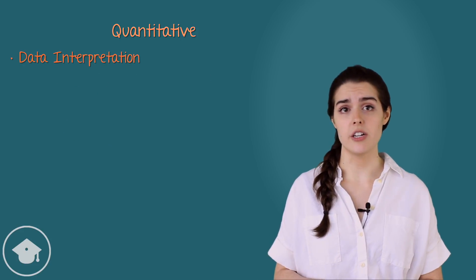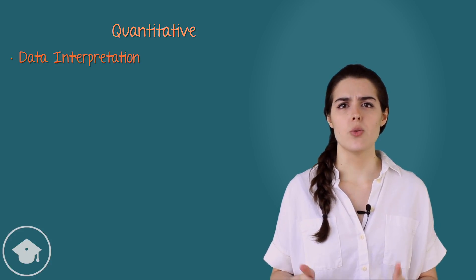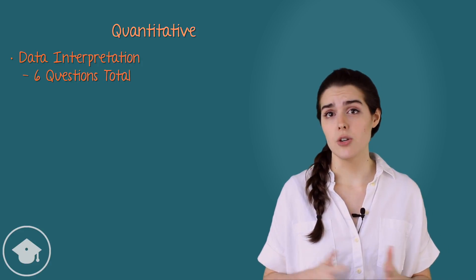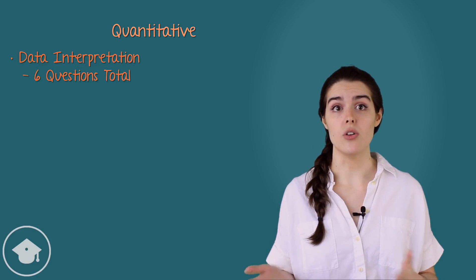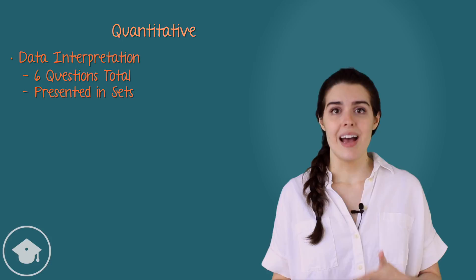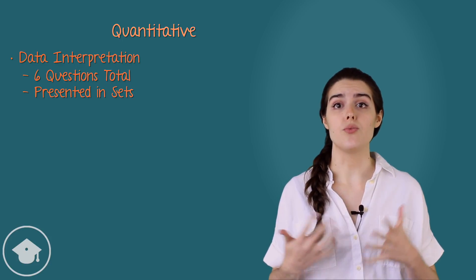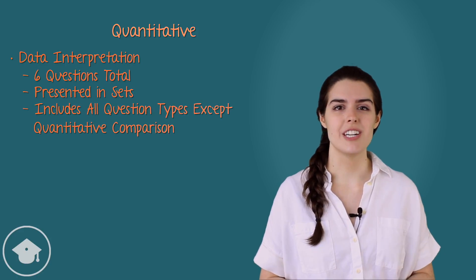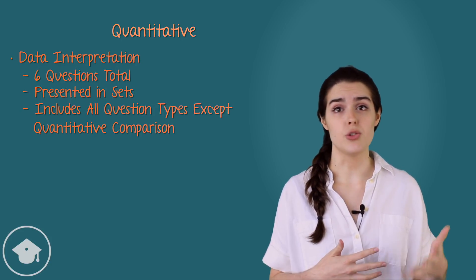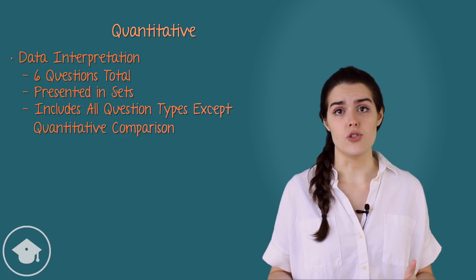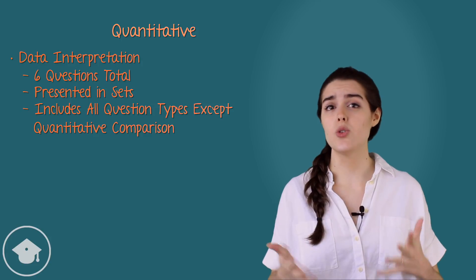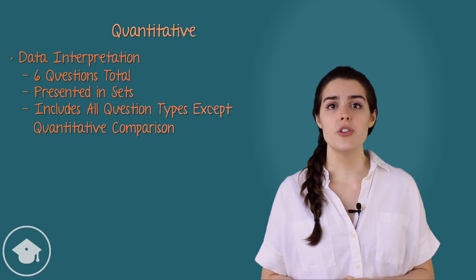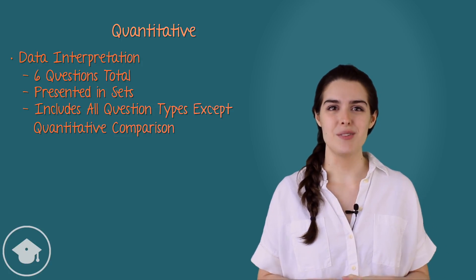Finally, an odd case in the quantitative section: data interpretation question sets. These require the test taker to interpret data presented in various formats — tables, graphs, and other visual presentations. There are three data interpretation questions in each quant section, or six total on the test, and all three in a section are presented together as they all go with one set of data — much like multi-question reading comprehension passages. Data interpretation isn't its own question type; the questions can be multiple choice select one, multiple choice select one or more, or numeric entry — but not quantitative comparison. Check out our how-to-beat-data-interpretation-questions video for larger strategy.